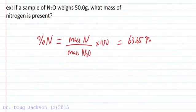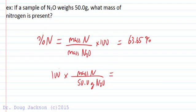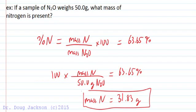Given in the problem is that the mass of the whole sample is 50.0 grams of N2O is equal to 63.65%. So using a little algebra, we solve for the mass of atomic nitrogen. Divide both sides by 100, multiply both sides by 50.0 grams, and we get 31.83 grams of atomic nitrogen in a sample of dinitrogen monoxide.